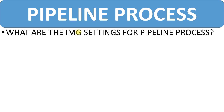The first question you might get is: what are the IMG settings for the pipeline process? You need to explain what configurations you have done before the pipeline process needs to be executed — basically, what are the basic IMG settings that need to be done. The explanation is already there in the pipeline process classes, so you can go through those classes and find out the answers.